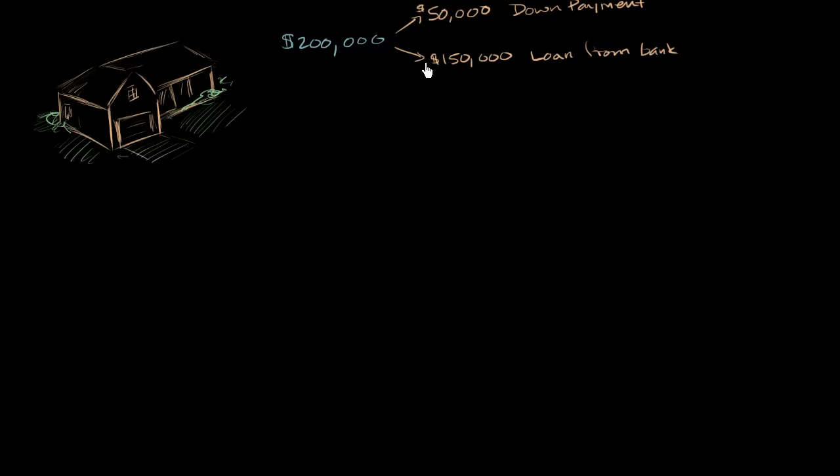And you pay it off with your monthly payments that include paying down the loan and the interest. Now something happened in your life. Maybe unfortunately you lost your job or your spouse lost their job. Or maybe you just overestimated your ability to pay off your mortgage payments. And so you're having difficulty making them, and frankly you can't make your mortgage payments anymore.